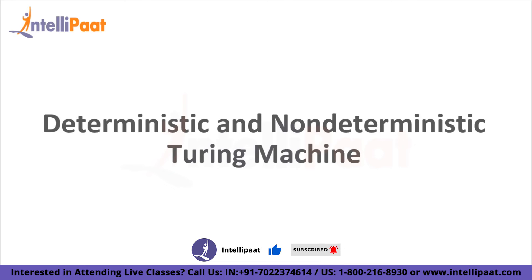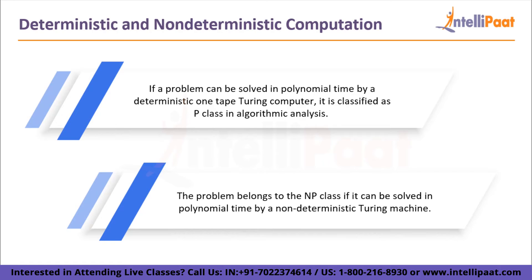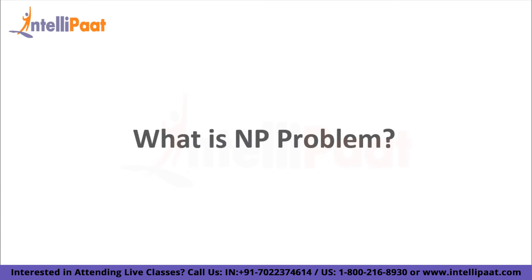Let's move on to deterministic and non-deterministic Turing machines. If a problem can be solved in polynomial time by a deterministic one-tape Turing machine, it is classified as P class in algorithmic analysis. For non-deterministic, the problem belongs to the NP class if it can be solved in polynomial time by a non-deterministic Turing machine.